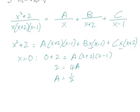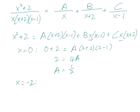And similarly, if we let x equal minus 2, then the terms involving A and C are going to disappear from the right. And so we have minus 2 squared, that's 4 plus 2 on the left, and then B times minus 2 times minus 3. So 6 equals minus 6B, B is minus 1.